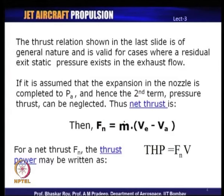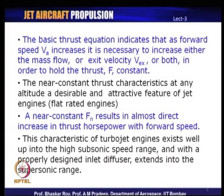Thrust power, THP, is simply written as F_n times the velocity with which the aircraft is moving — that is, the power created by the propulsion device based on the thrust it generates. The basic thrust equation indicates that as forward speed V_a increases, it is necessary to increase either the mass flow or the exit velocity V_e, or both, in order to hold the thrust constant.